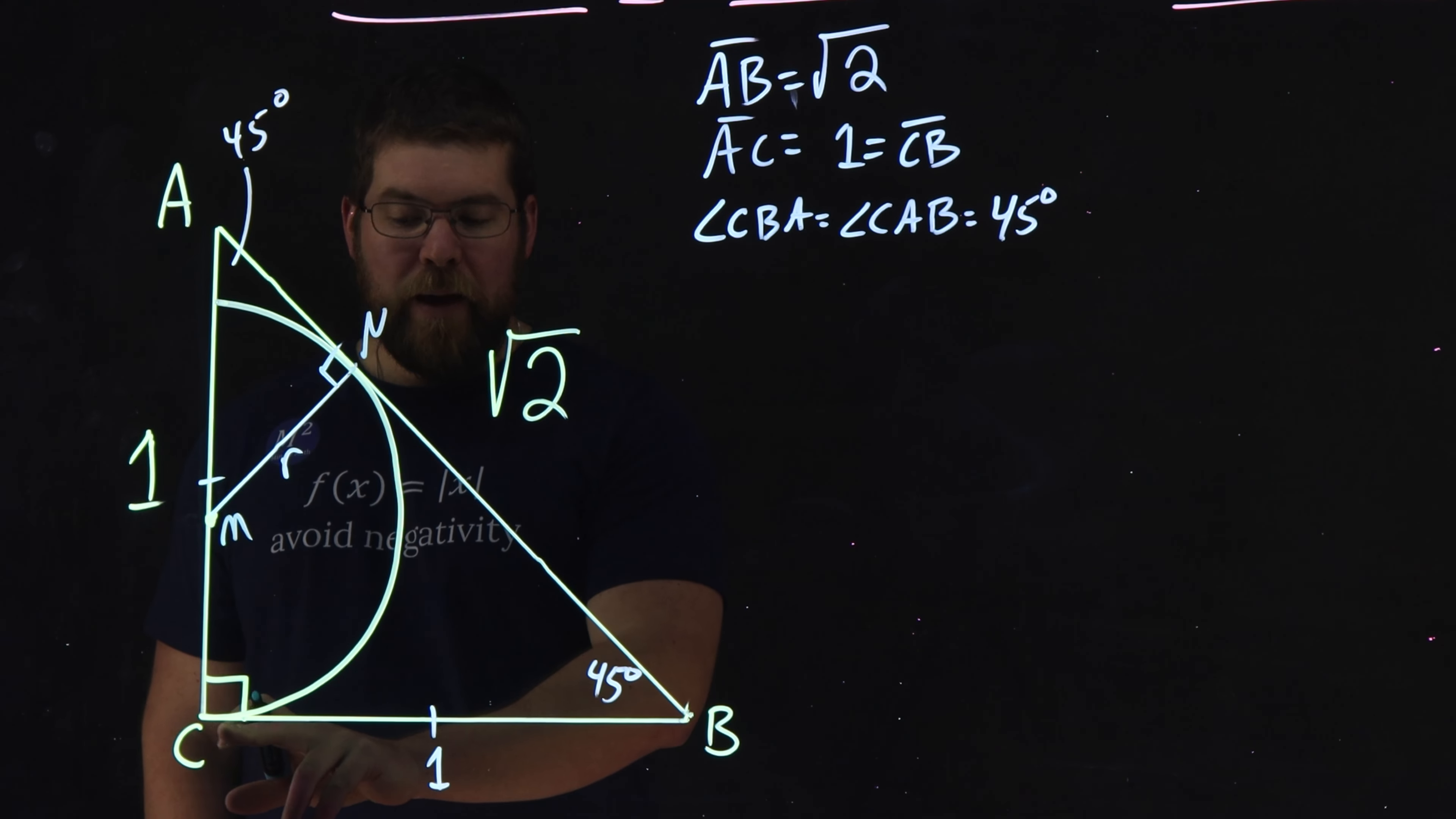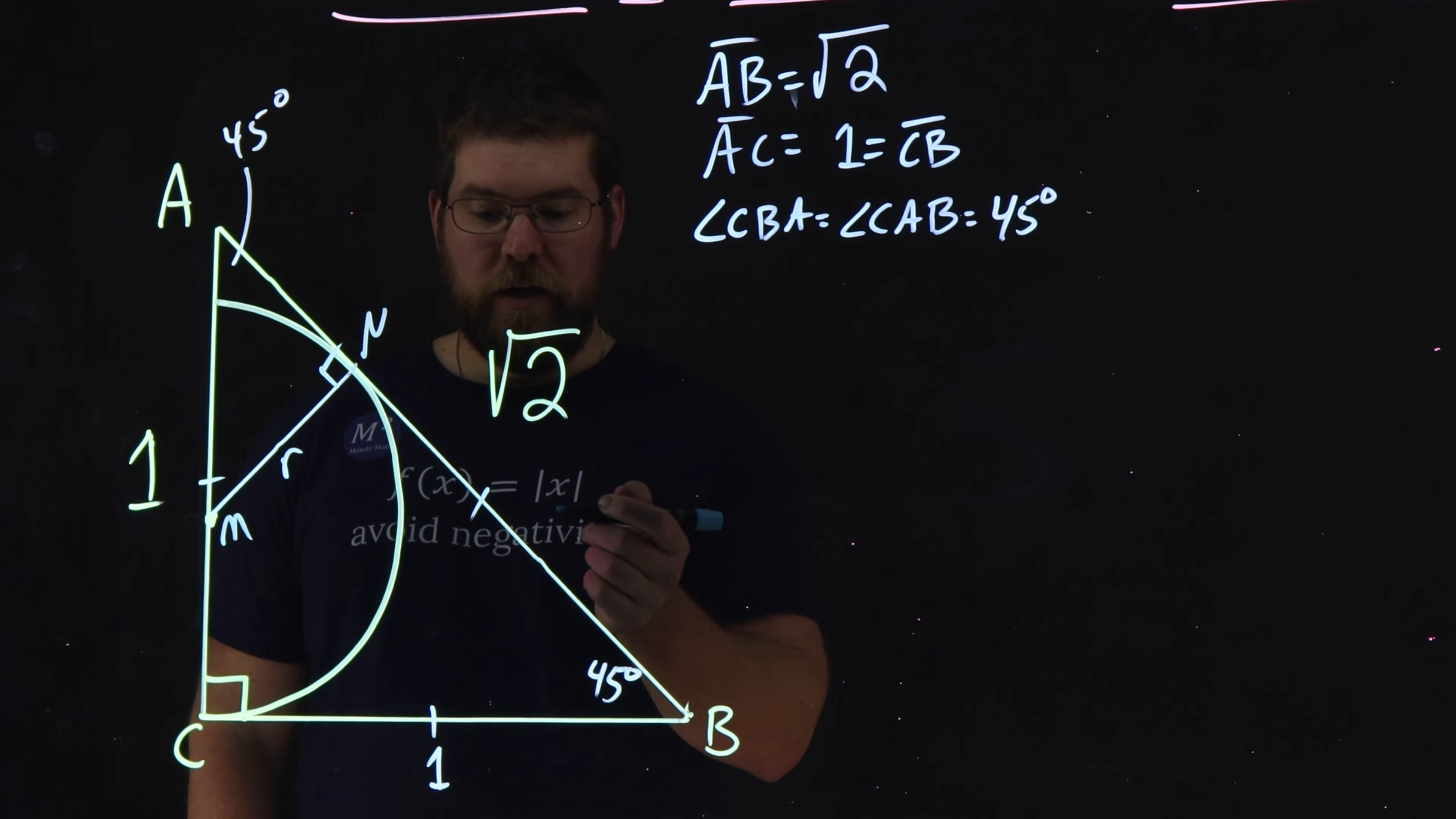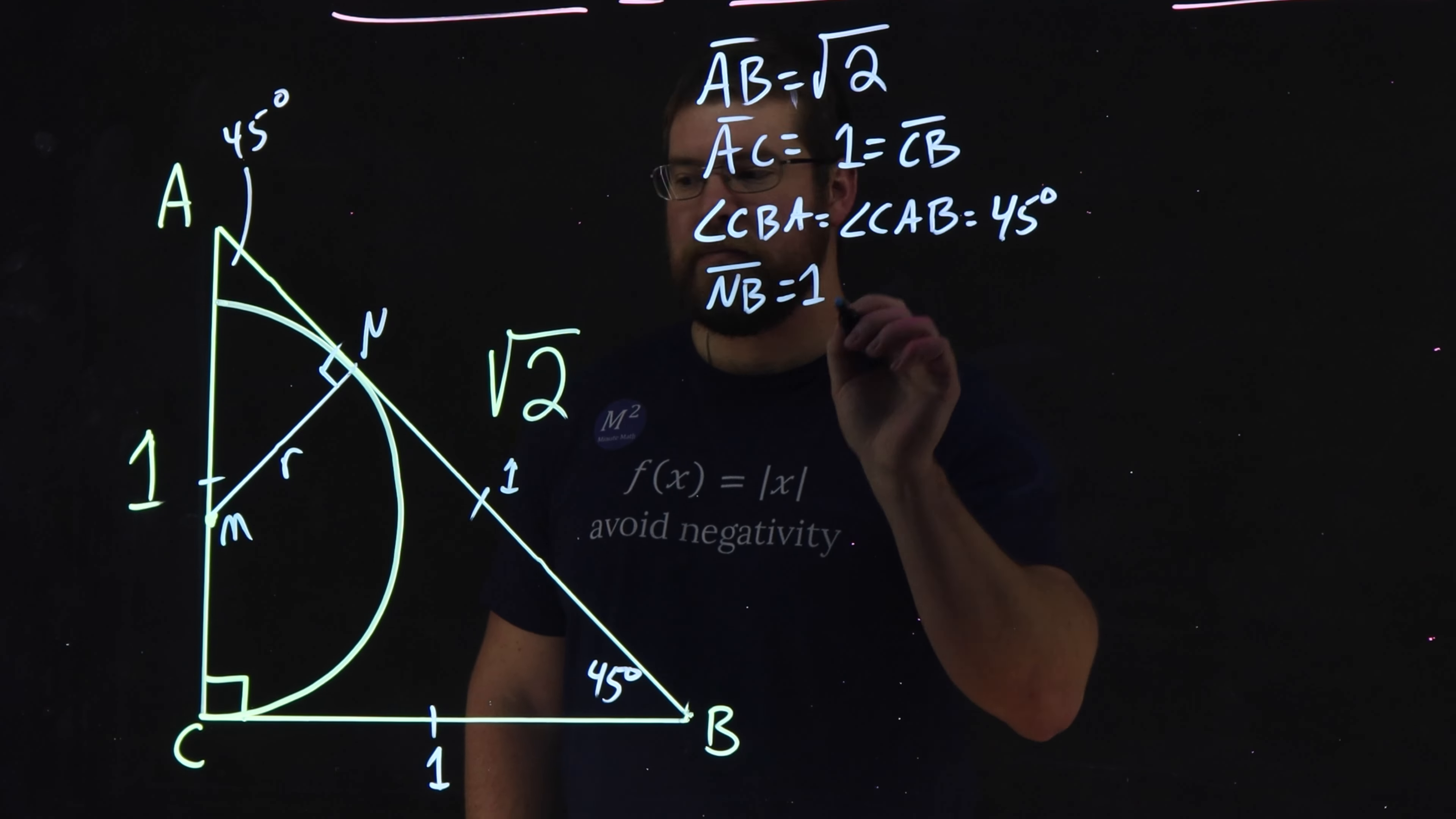That means that CB is congruent to NB. So let's go ahead. There's one here. So that means that's the length of one. And so the length of NB is also equal to one here.